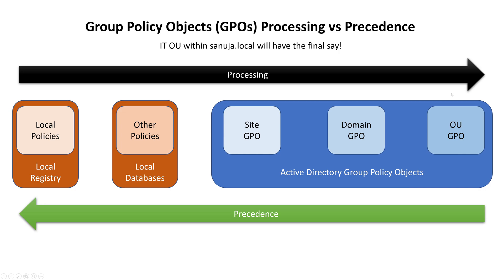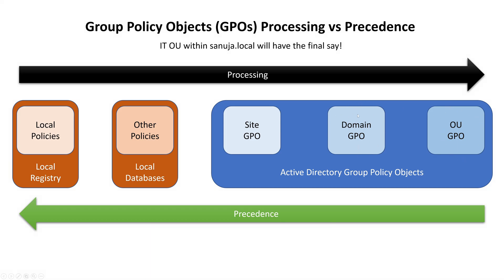Another way of explaining this: if I apply a specific background image to all my end users within a specific organizational unit, but I also have a background image applied at the domain GPO level as well, the organizational unit GPO takes precedence over the domain GPO. So what users are going to see is the background image policy applied at the organizational unit level, rather than what is applied at the domain group policy level.